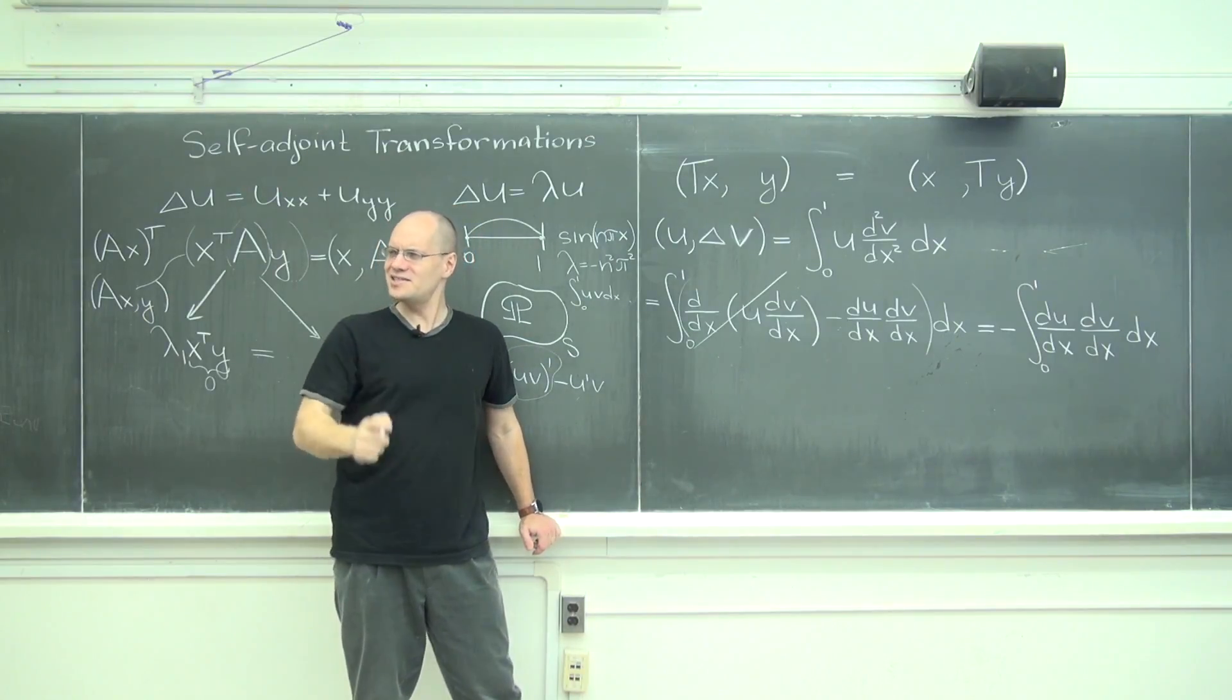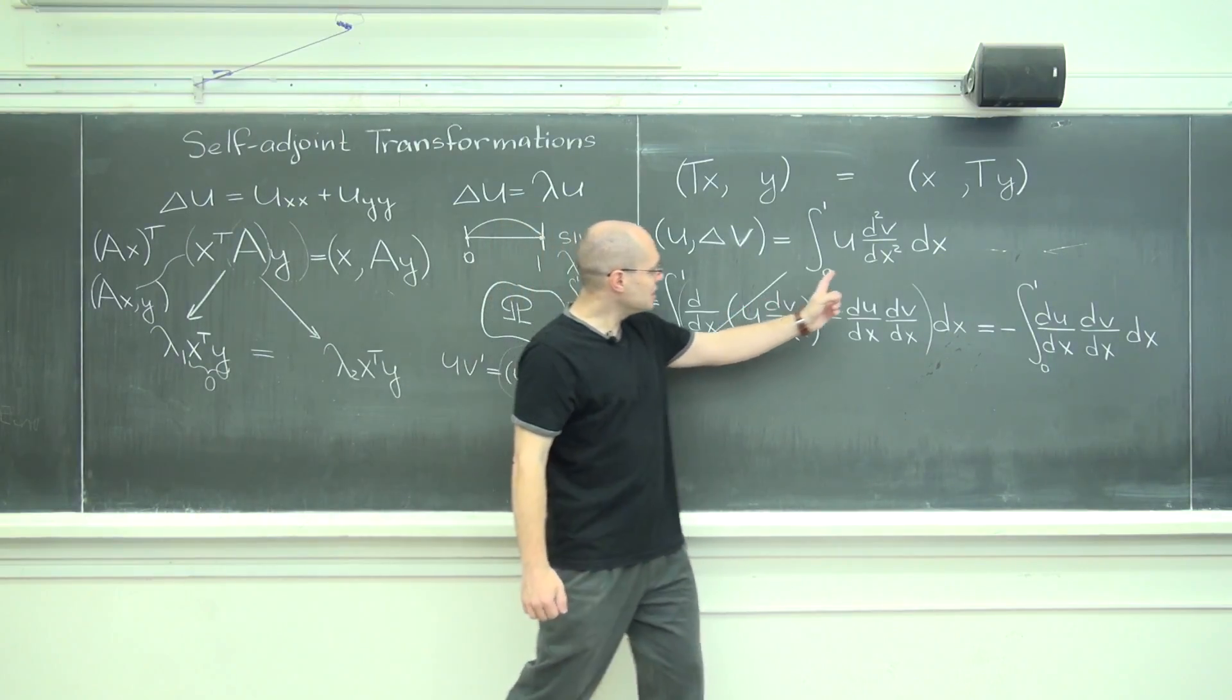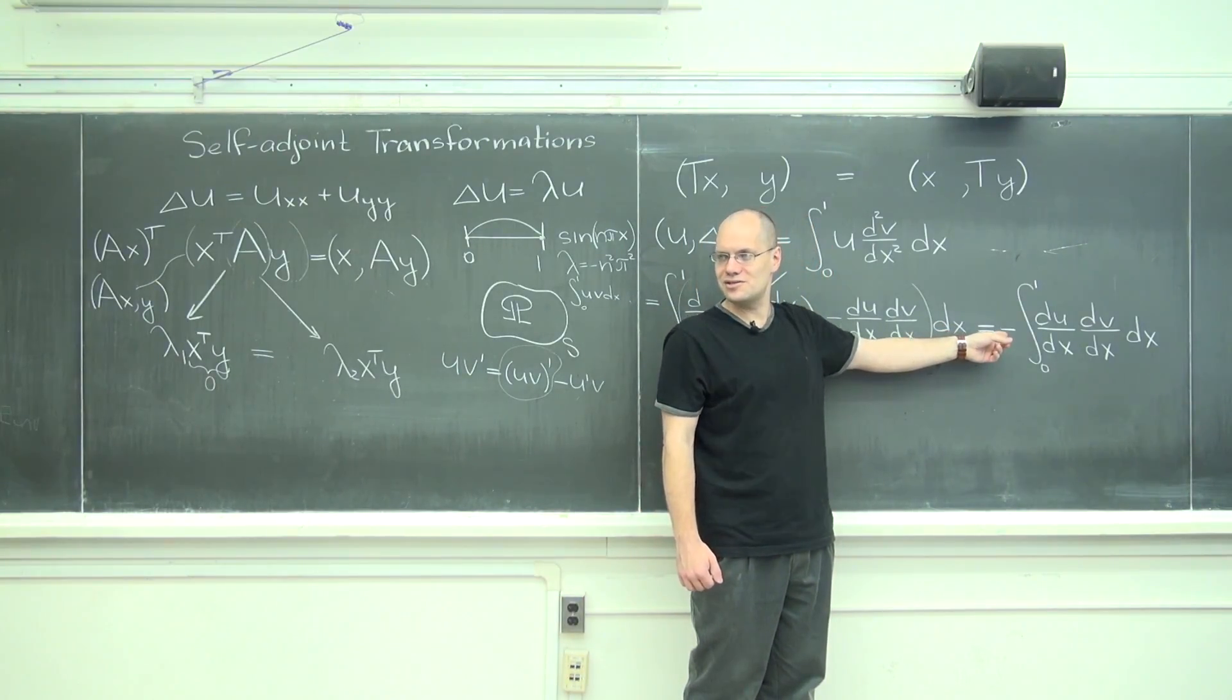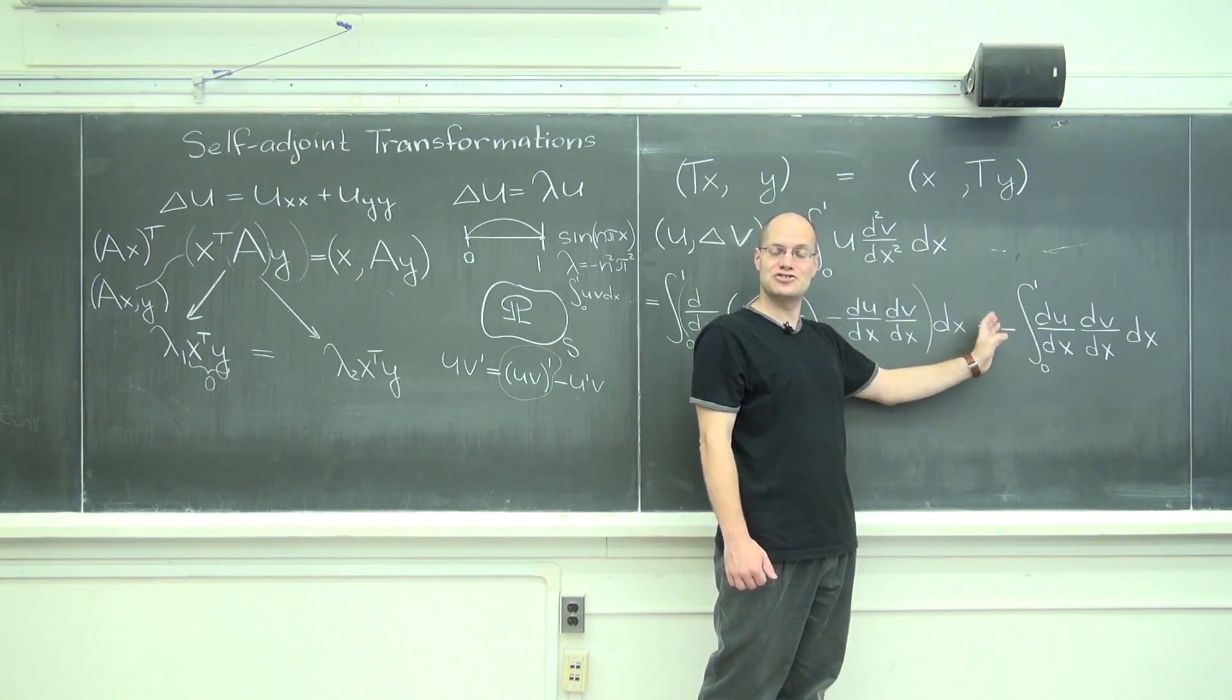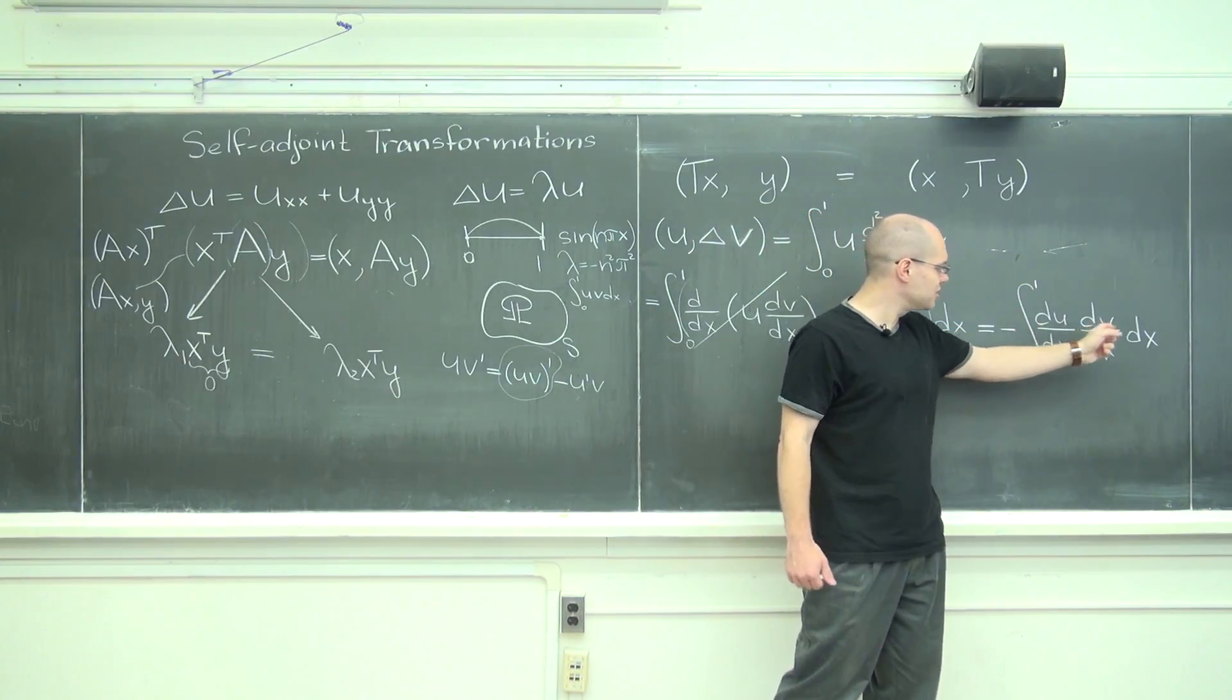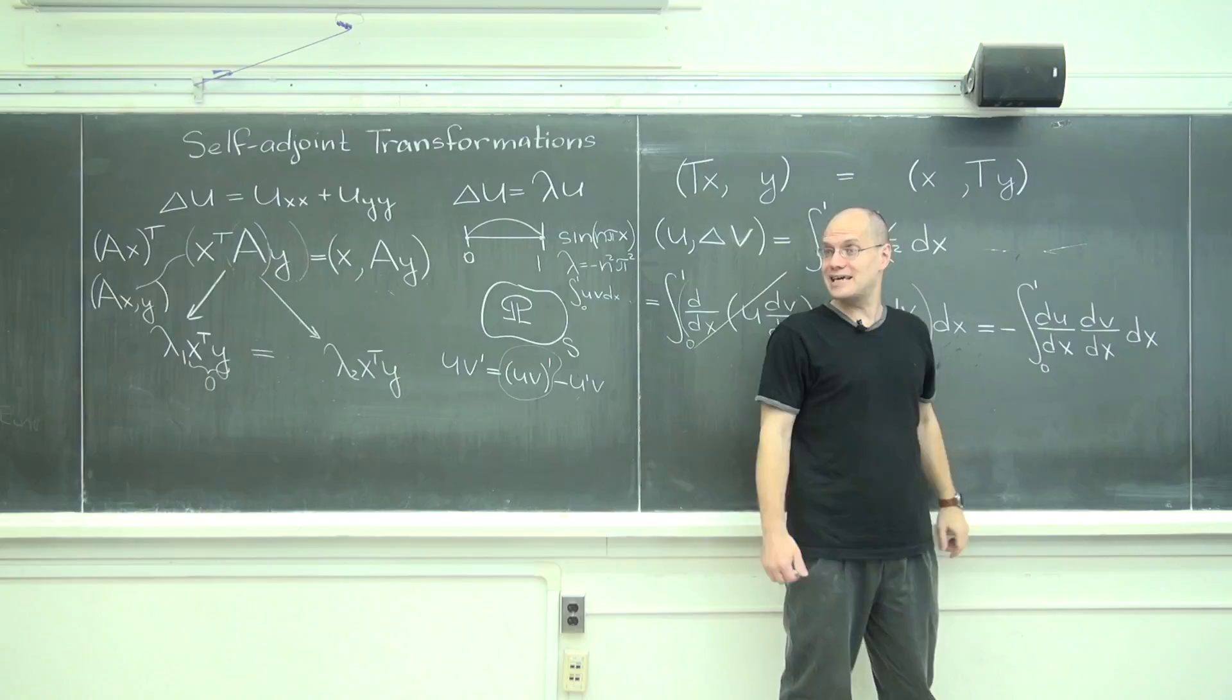The integral of this from 0 to 1 is this anti-derivative evaluated at 1 minus its value evaluated at 0. But because we're only considering functions that have zeros at the boundary, this term drops out. When you apply the fundamental theorem of calculus and do that evaluation at the end points, they're both 0 because u is 0 at both points. So this actually drops out and we're left with... Here is what integration by parts does.